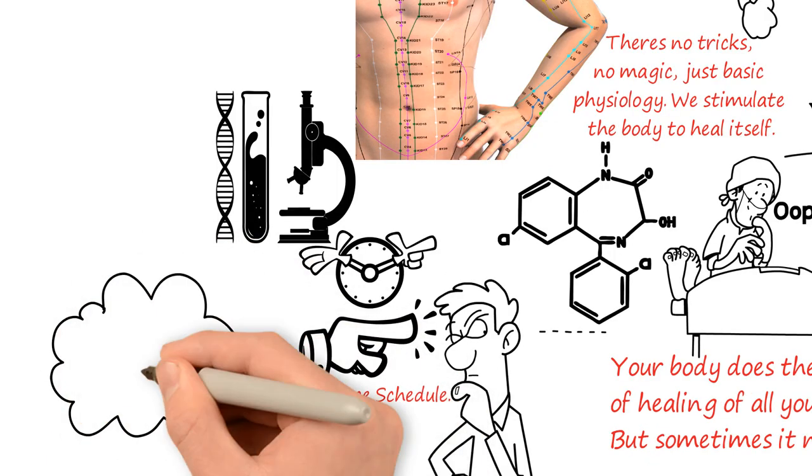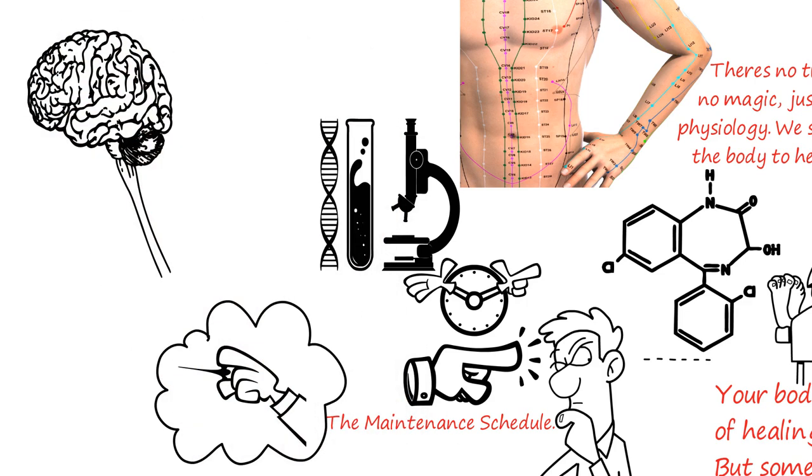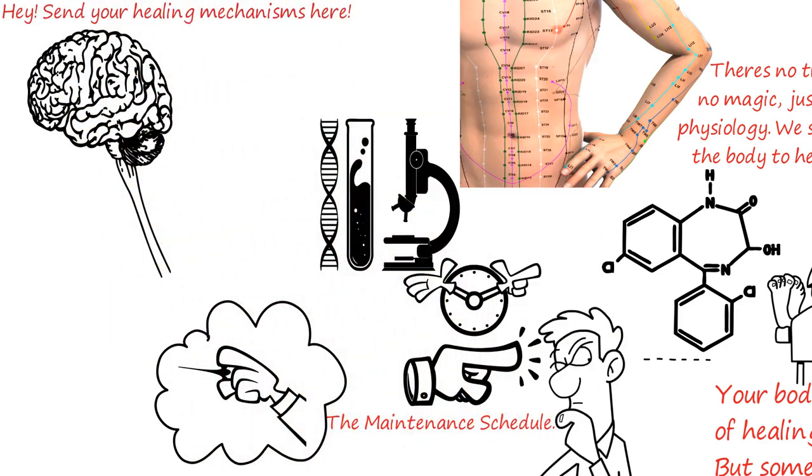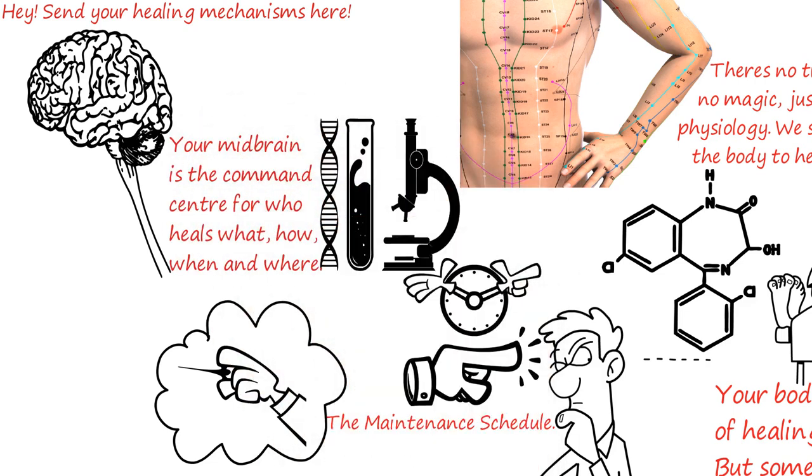So how does acupuncture help the body heal itself? When we insert a needle into your body, it stimulates your central nervous system, sending a message to the midbrain saying, hey, send your healing mechanisms here. Your midbrain is the command center for who heals what, how, when, and where.